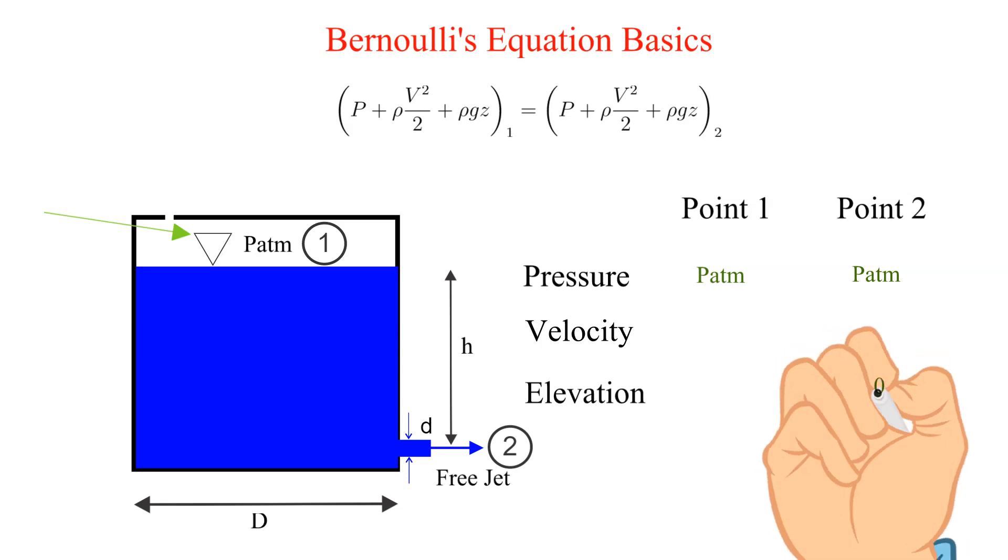We will set the elevation datum at point 2 so the elevation of point 2 is 0. The elevation at point 1 is then H. The velocity at point 2 is the unknown and denoted by V2.